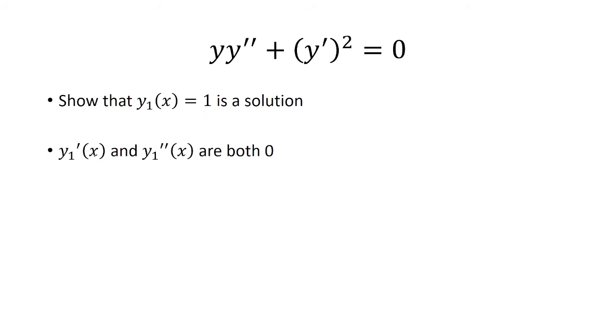If y sub 1 of x is 1, then y prime and y double prime are both going to be 0. So then I could just plug it into the equation. We'll have 1 times 0 plus 0 squared. That's going to be 0.